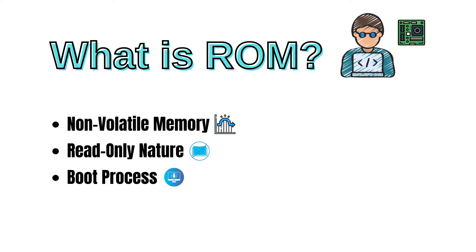One of the primary uses of ROM in a computer is in the boot process. When a computer is powered on, it needs a set of instructions to start up the operating system. These initial instructions are stored in ROM. The BIOS or UEFI firmware, which is a type of ROM, is responsible for initializing the hardware and starting the boot process.